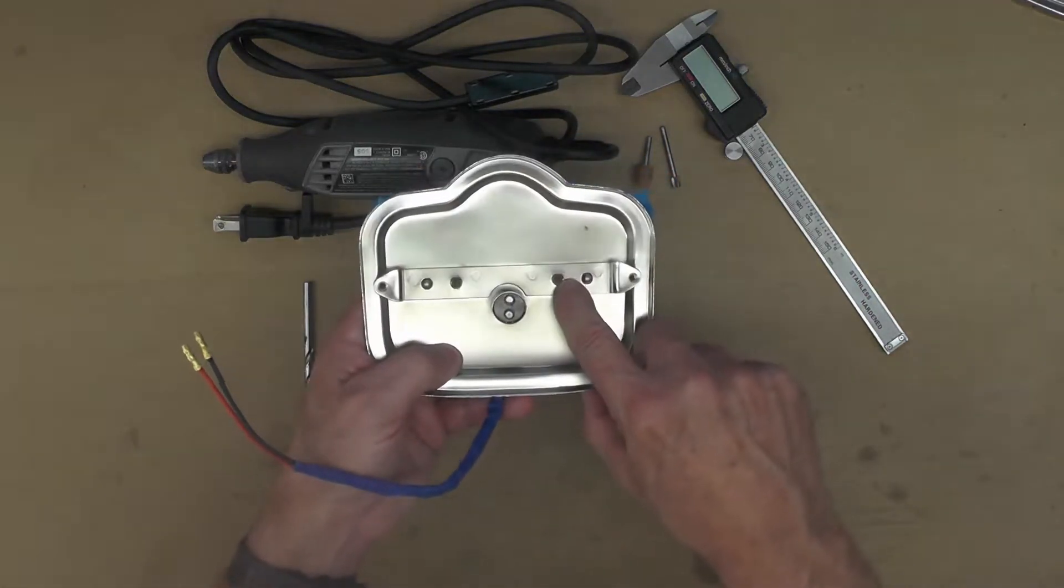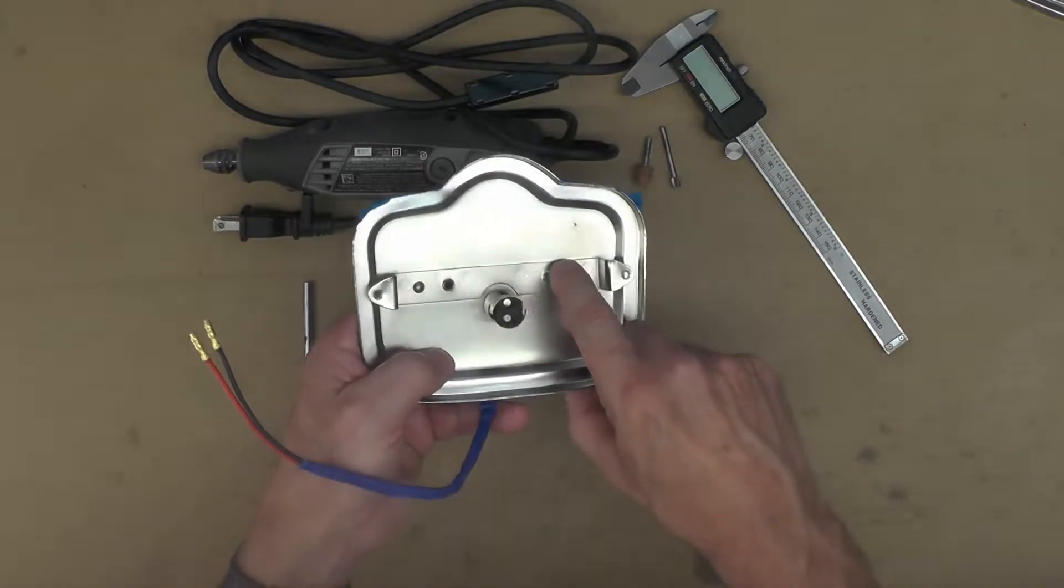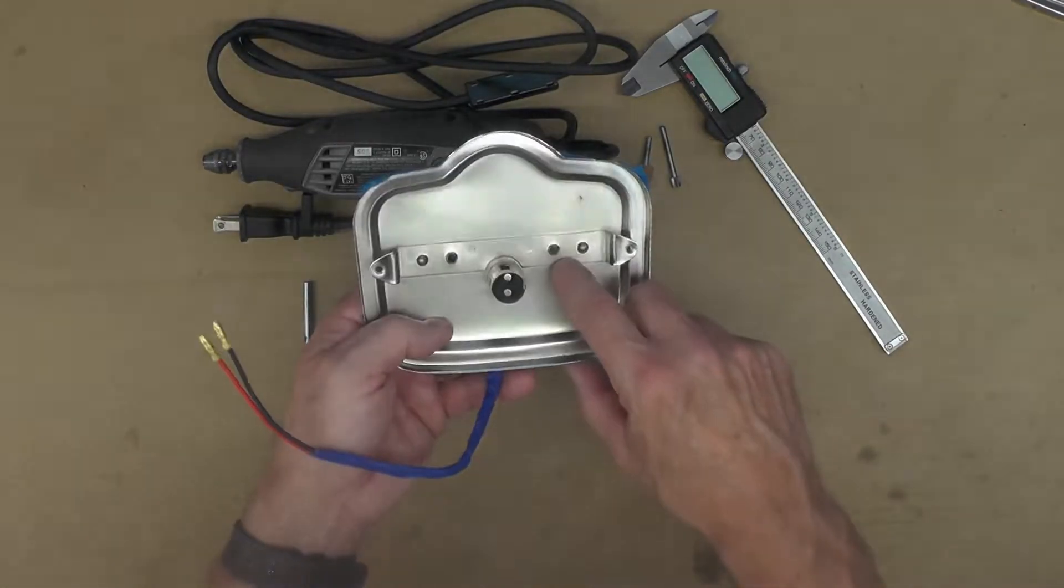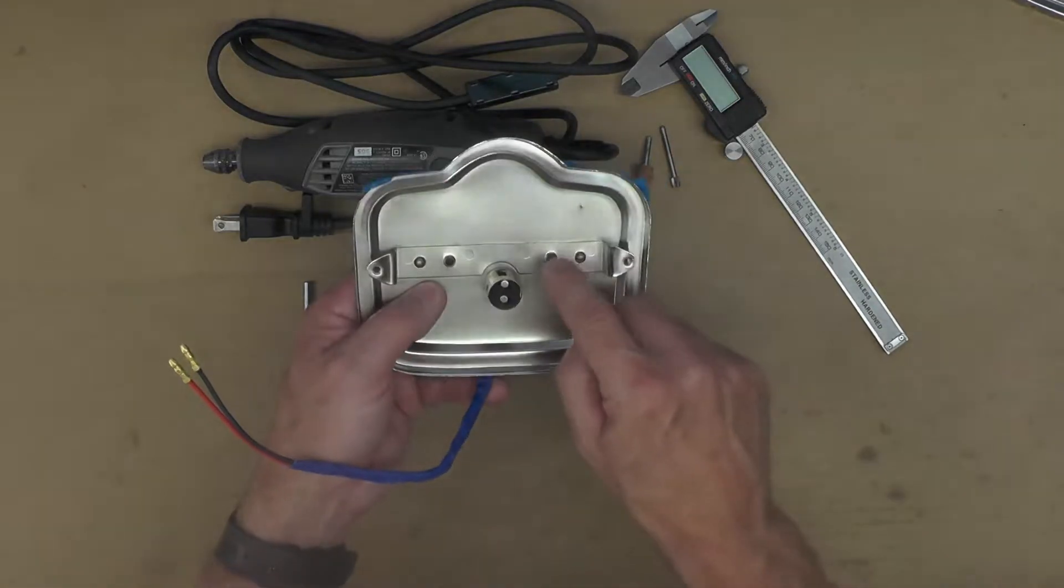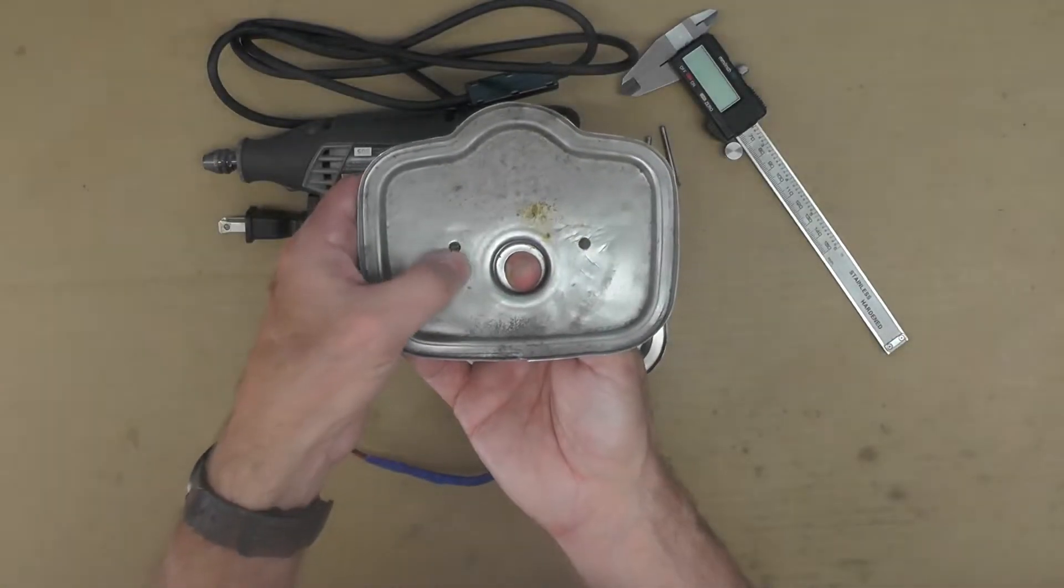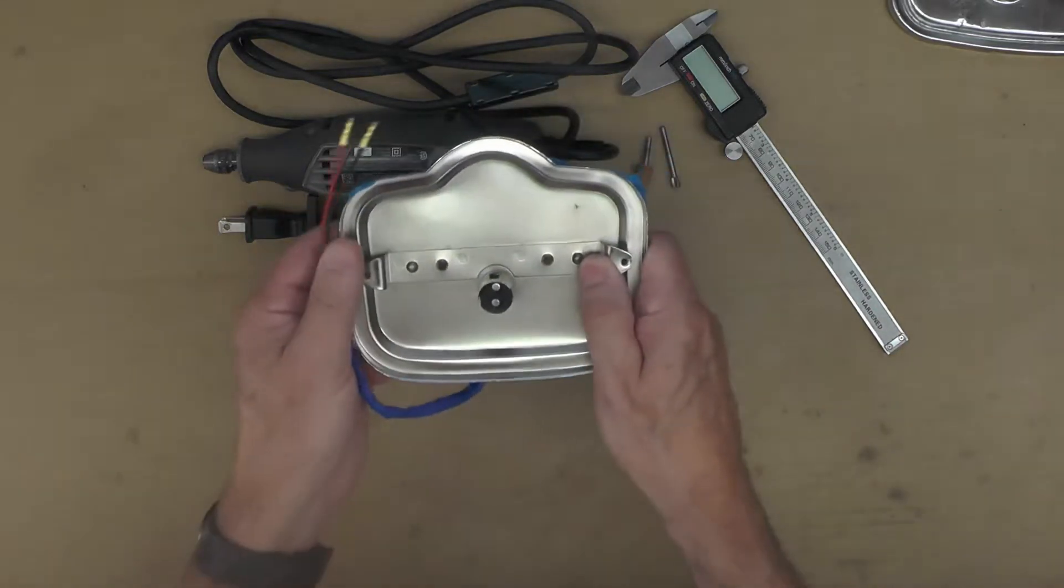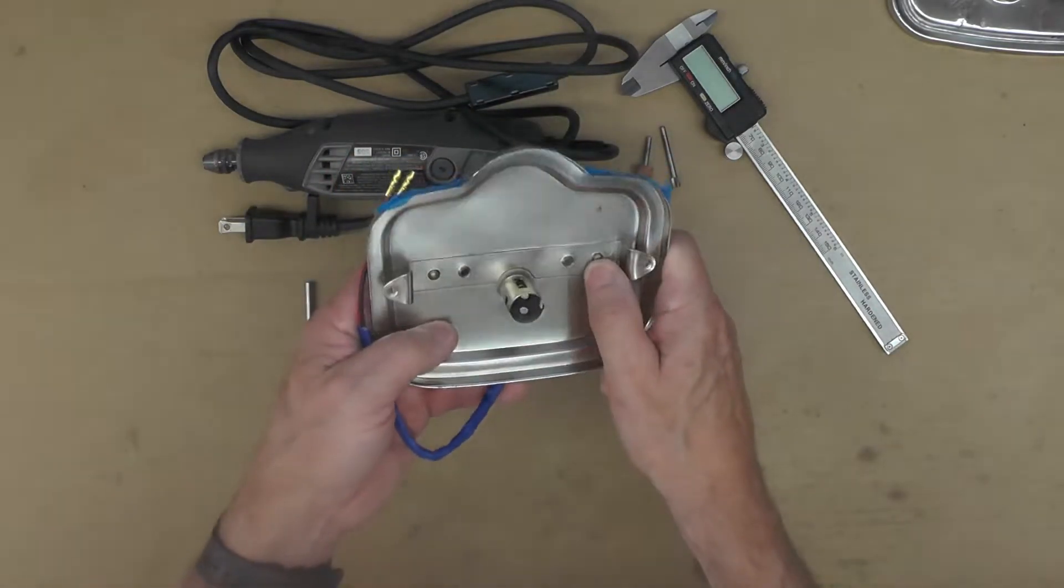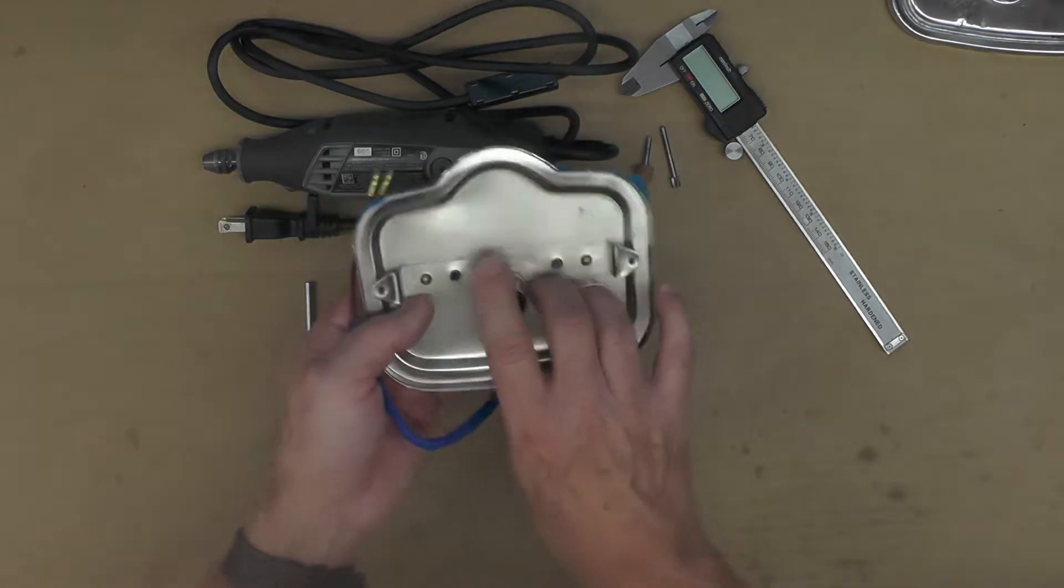First thing I'm going to do is grind off these little tabs on the back that are threaded. That was used for the original mounting method that the manufacturer of this plate intended. I'm not going to use that. I'm going to emulate what Suzuki did. You can see there is no threaded portion here. I'm just going to grind these off and use screws, washers, and nuts like Suzuki did.